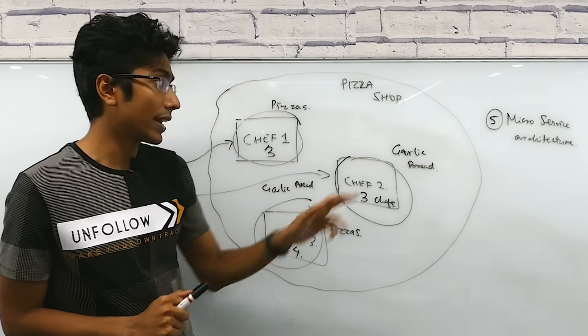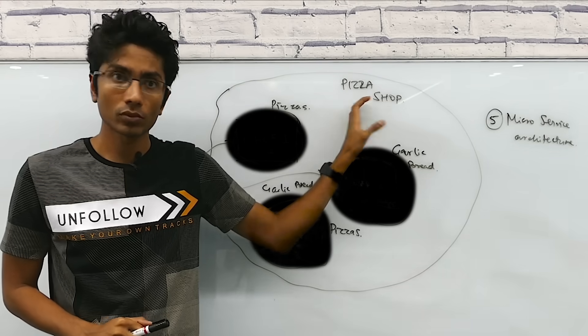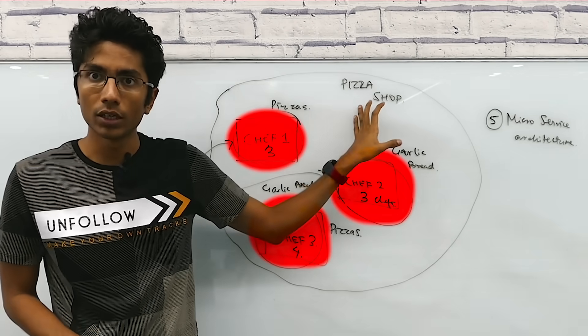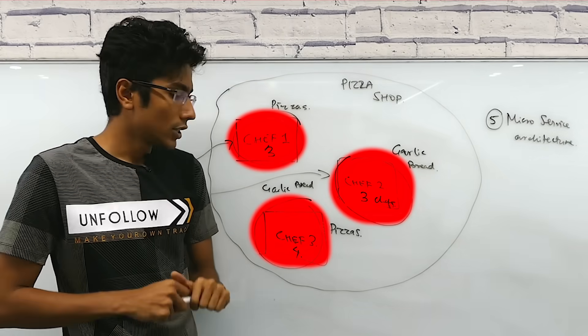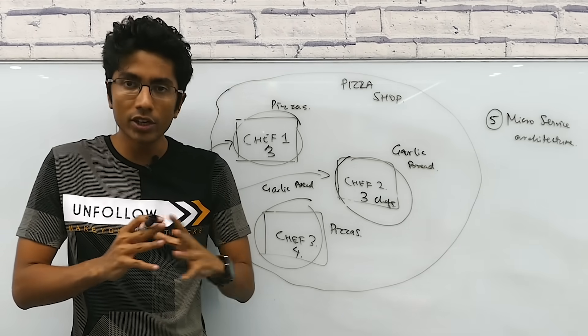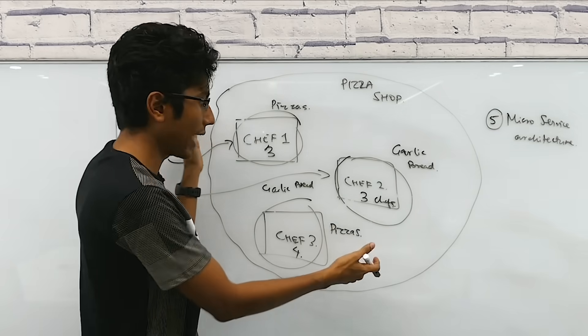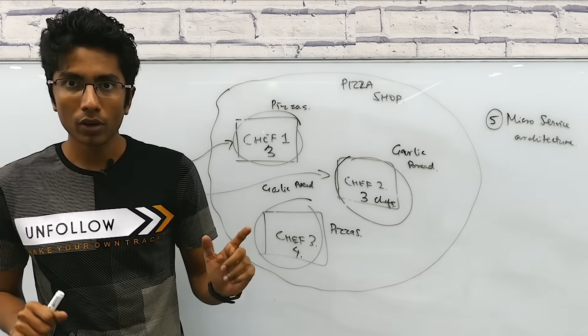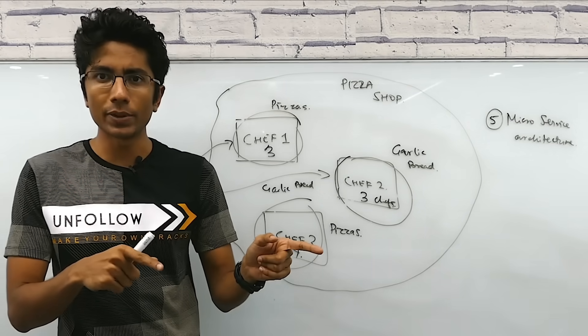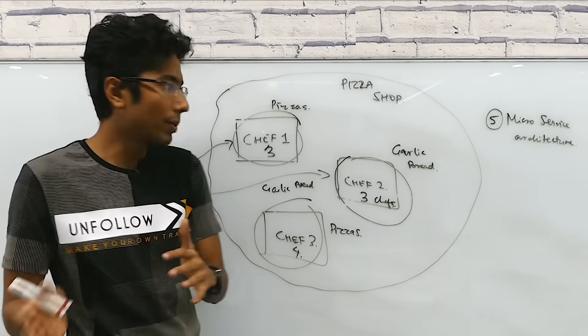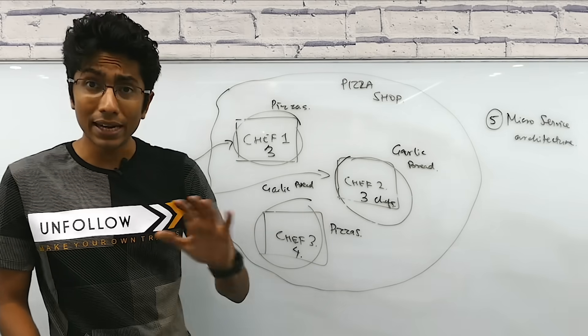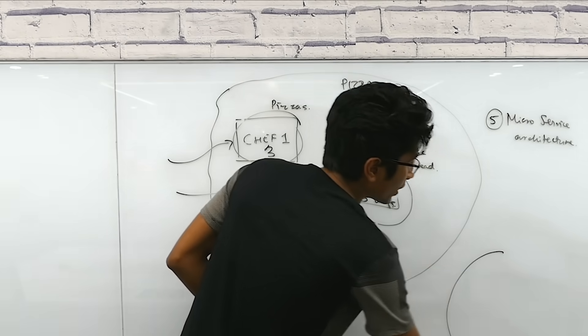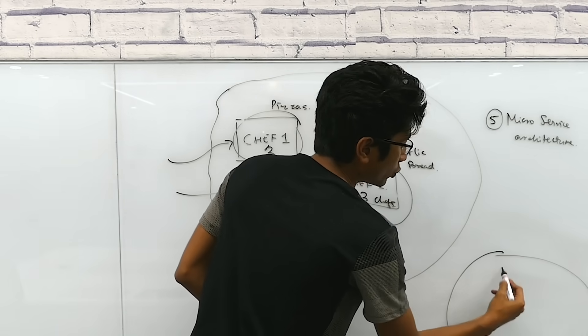But what if there is an electricity outage in this pizza shop? You won't have business that day. What if you lose your license for a day? You won't have business that day. So what you want to do is you want to distribute. I mean, you don't want to put all your eggs in one basket, not even in one shop. You want to buy a separate shop in a different place, which can also deliver pizzas. Maybe it takes more time. Maybe the number of chefs there is lesser, but at least you have a backup.